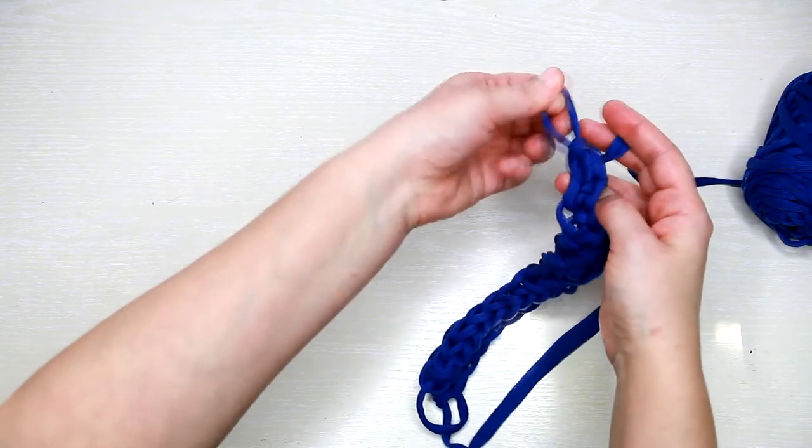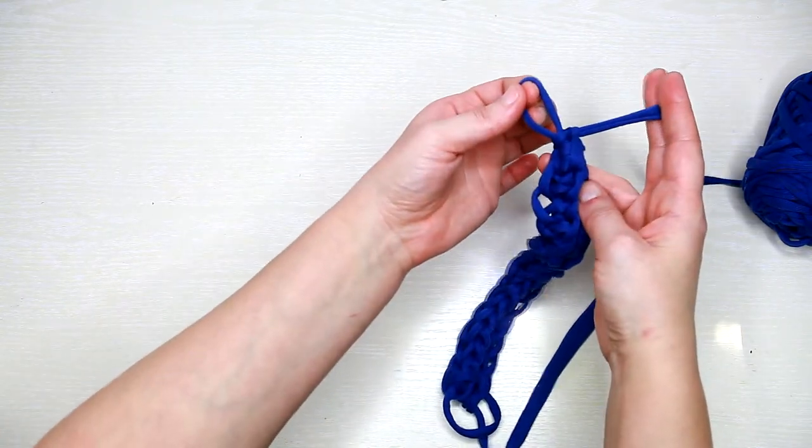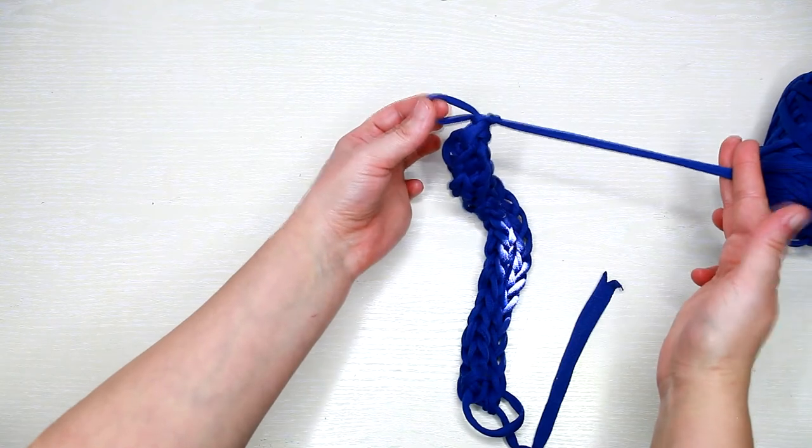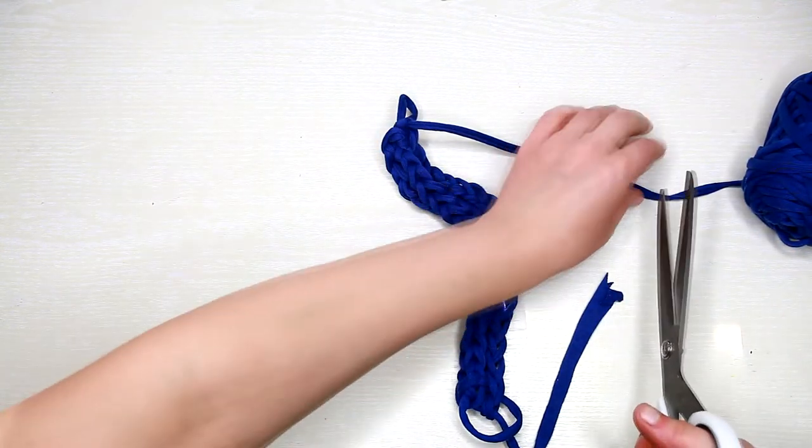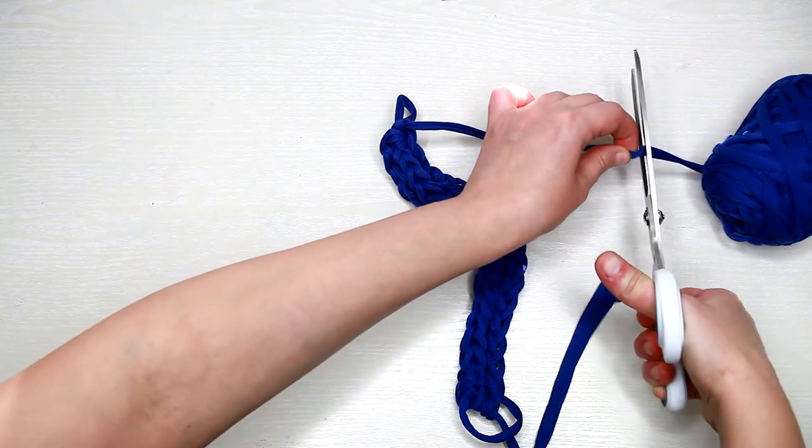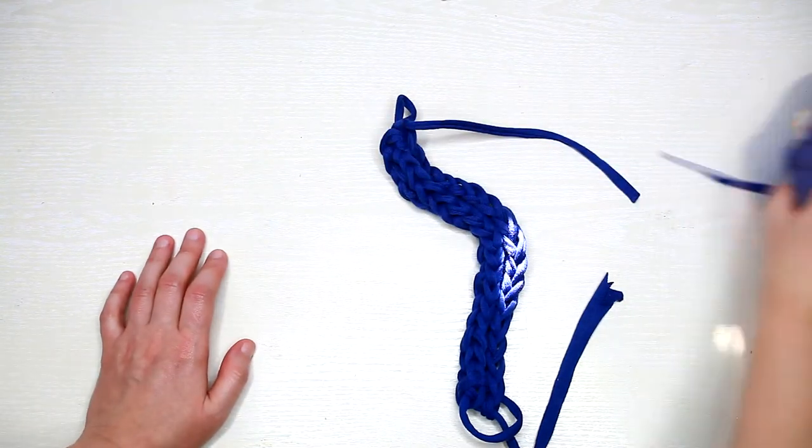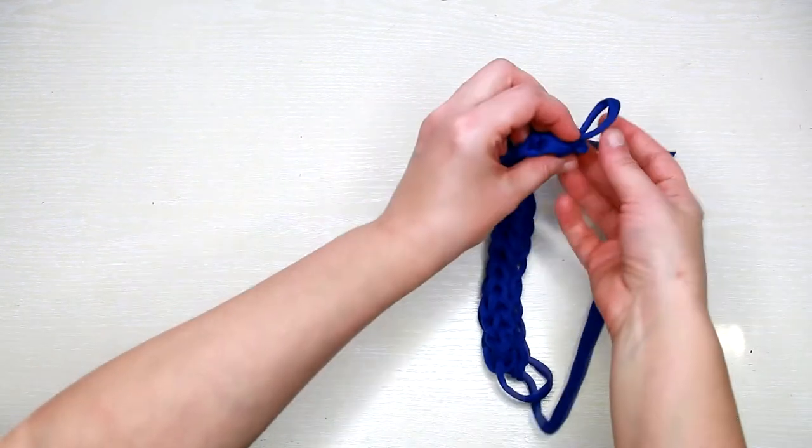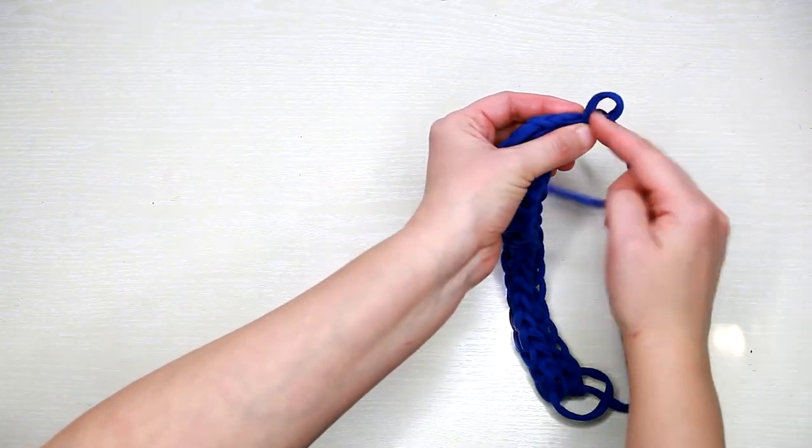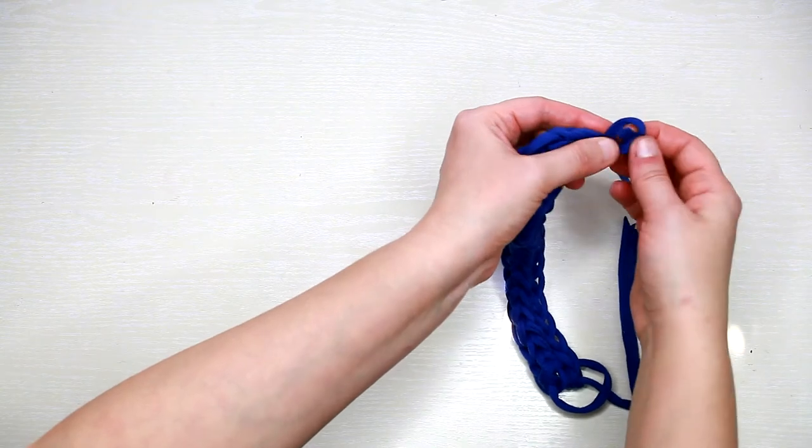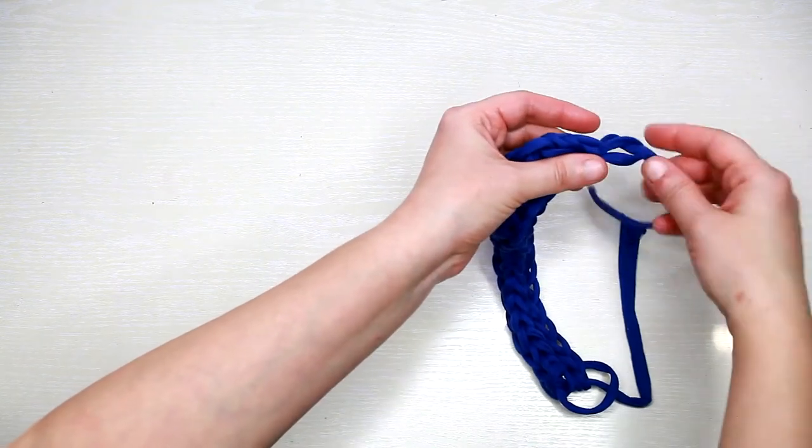This will be your last stitch, so cut the yarn. Then pass the tail through the loop and pull it tightly.